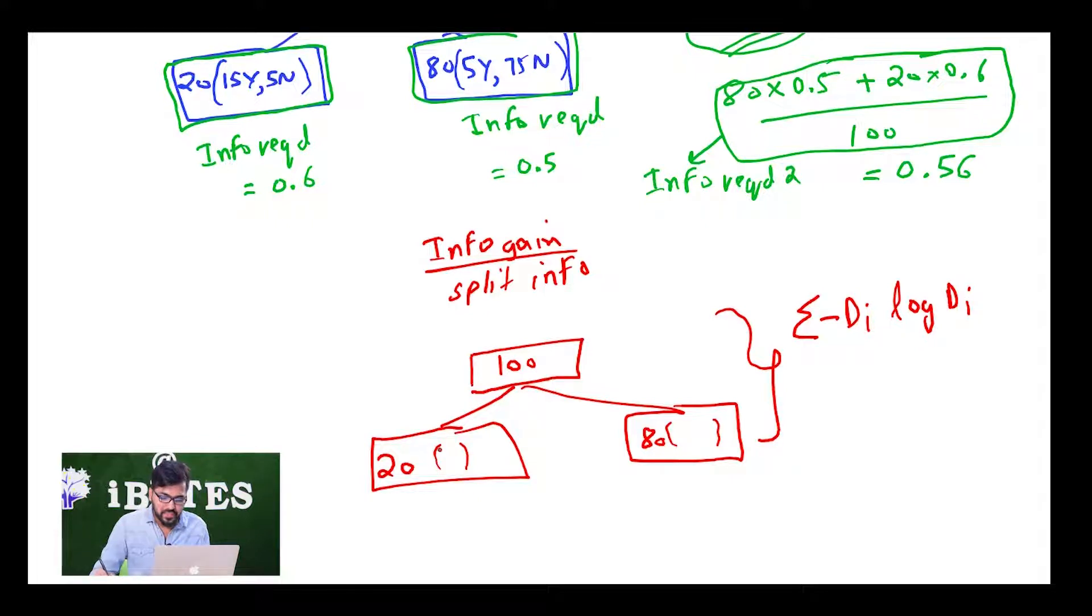Di is basically 20 by 100 and 80 by 100. So I am simply going to write minus 20 by 100 log 20 by 100 minus 80 by 100 log 80 by 100.